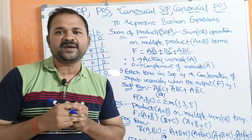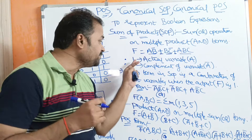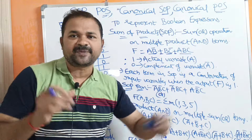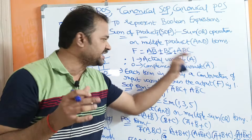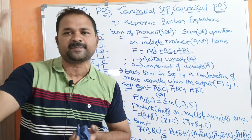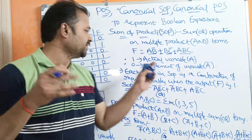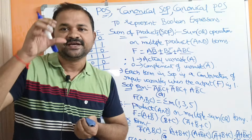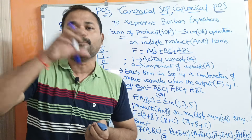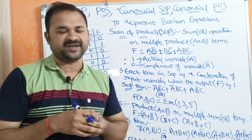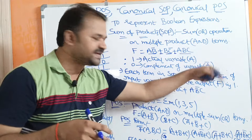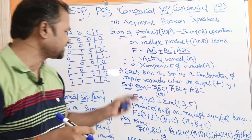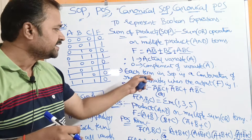In SOP, 1 means we have to represent the actual variable — that is A, or B, or C. Whereas 0 means we have to represent the complement of that variable, like A bar, B bar, C bar, and so on.